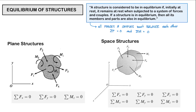As discussed in previous videos here in structural theory, we will be mainly dealing with two types of structures: your plane structures and your space structures. Your plane structures exist on a single plane — in this case your x and y plane — and are subjected to different coplanar forces and coplanar couples. So for our plane structure to be in equilibrium, we must satisfy the three equations of equilibrium.